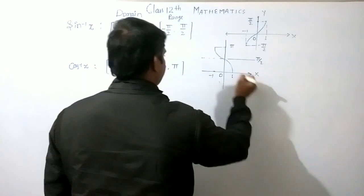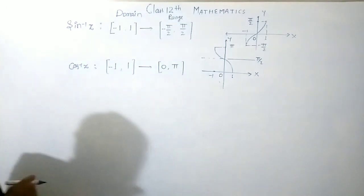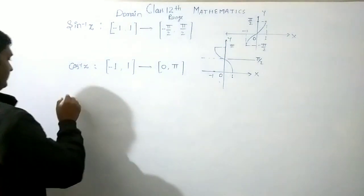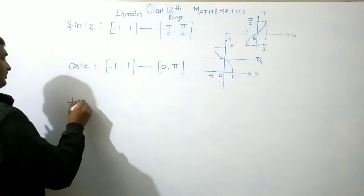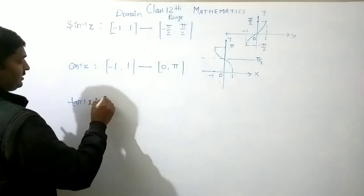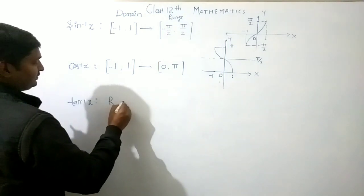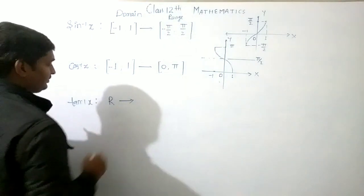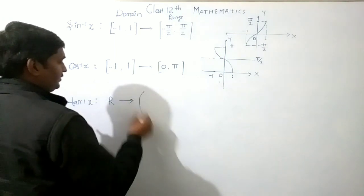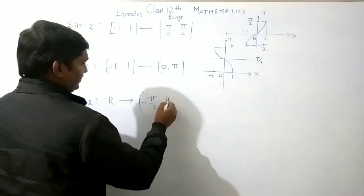X-axis, y-axis. Tan inverse x: the domain is the set of real numbers. Range: open interval (-π/2, π/2).